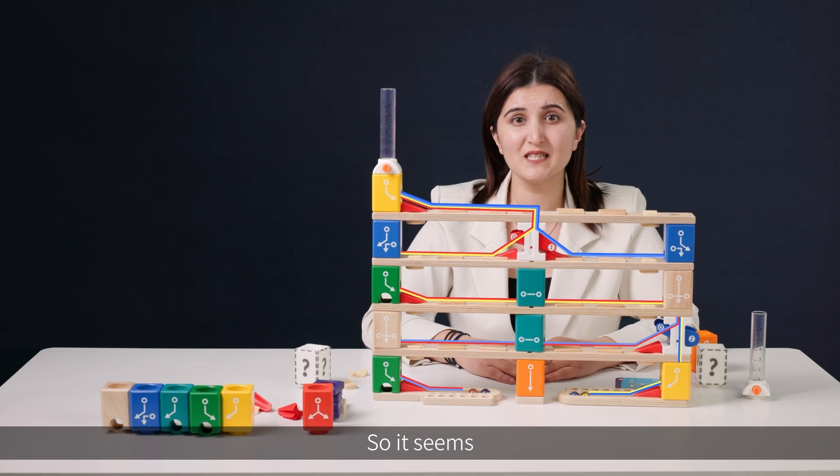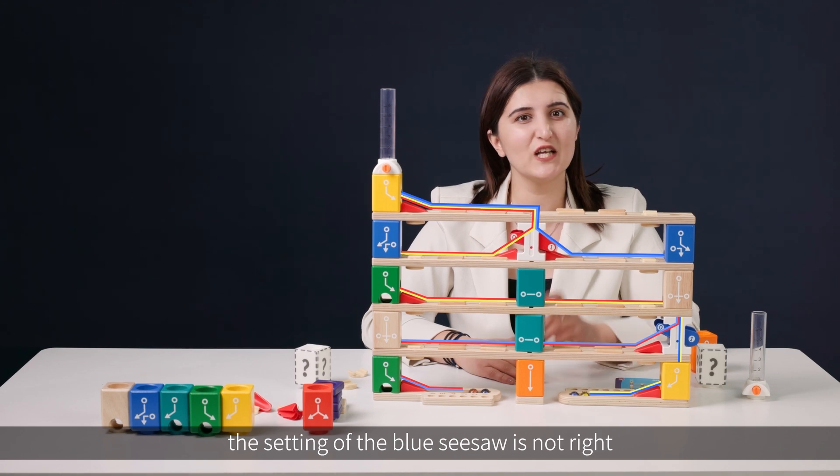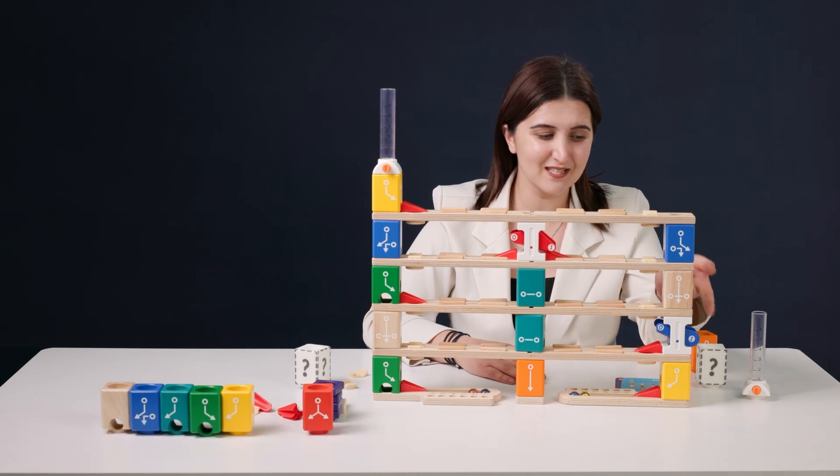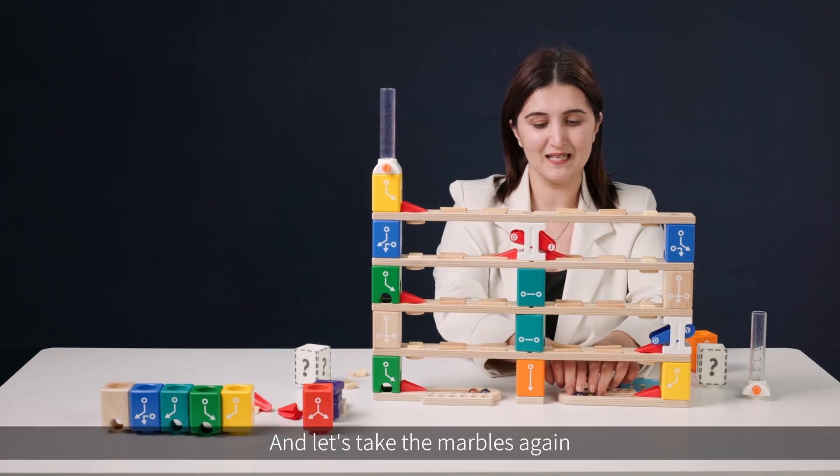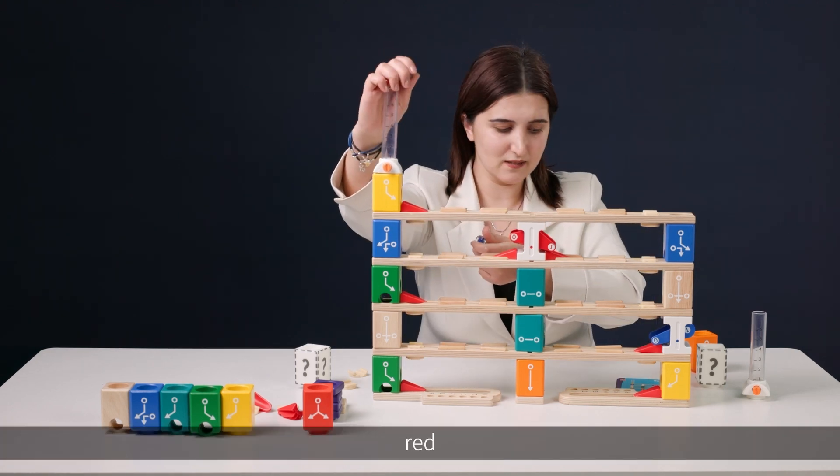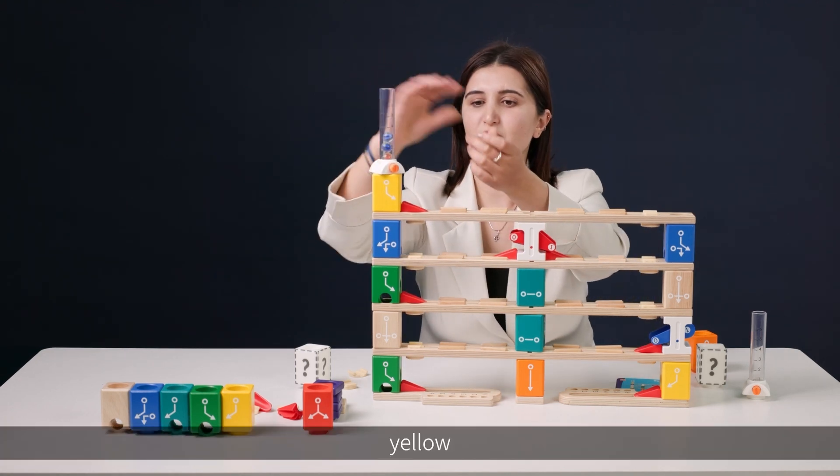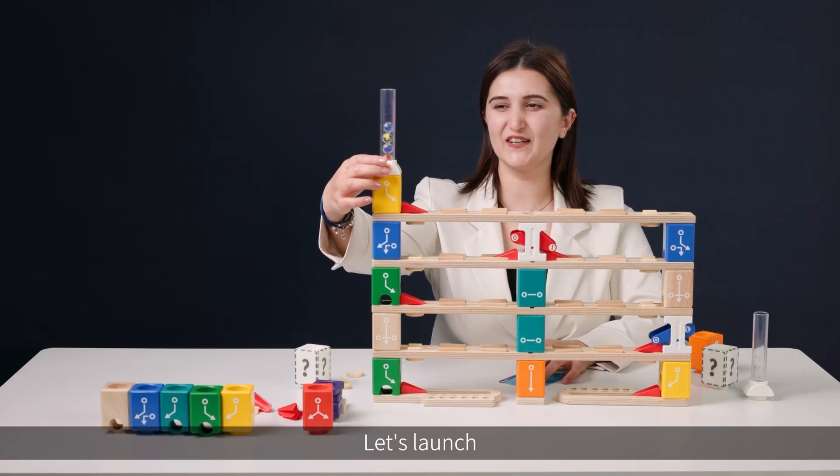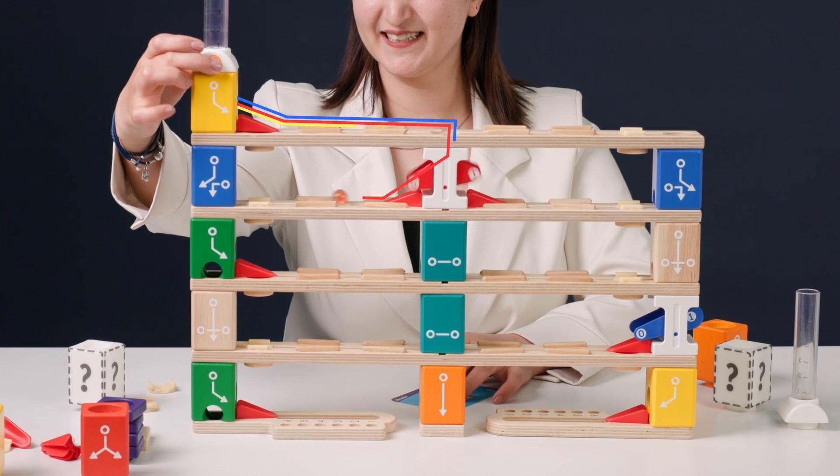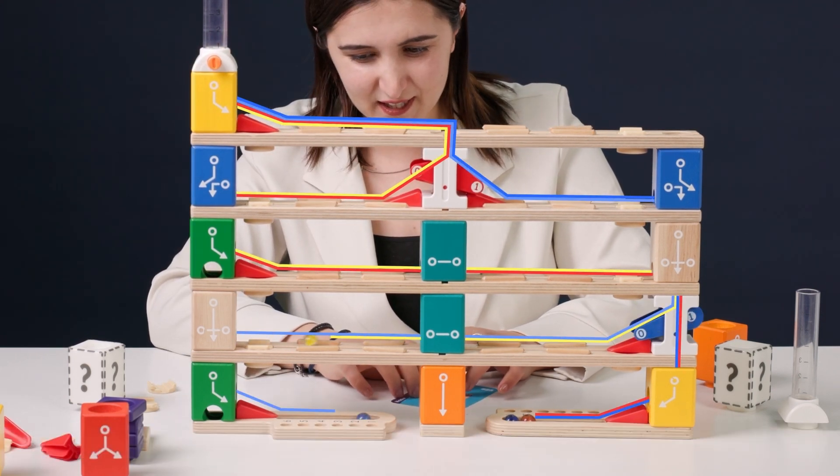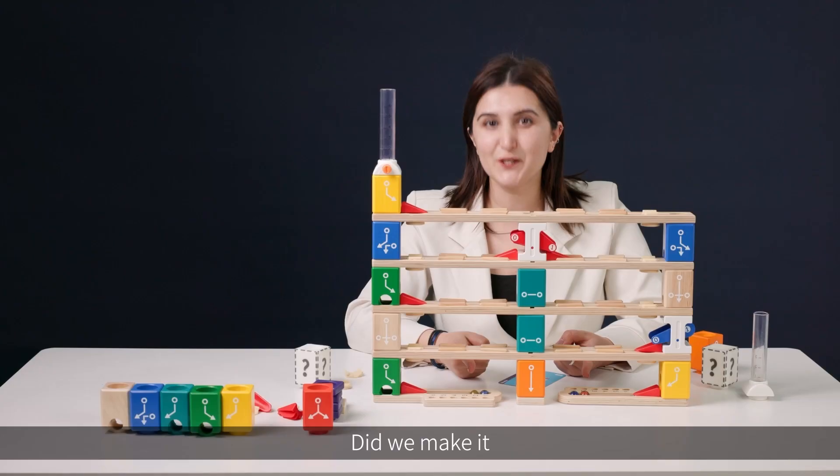So, it seems the setting of the blue seesaw is not right. Let's switch the numbers position. One up. And let's take the marbles again. Here we have red, blue, yellow, blue. Are you ready? Let's launch. Let's see where and how they go. Did we make it?